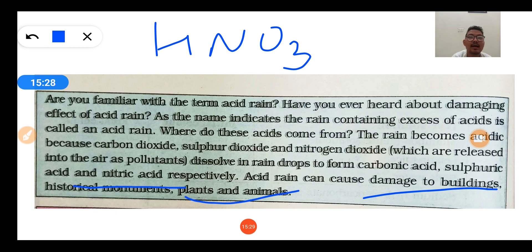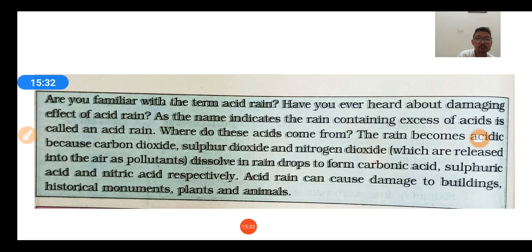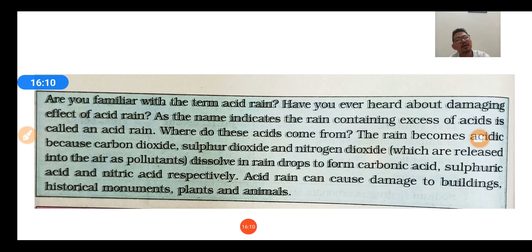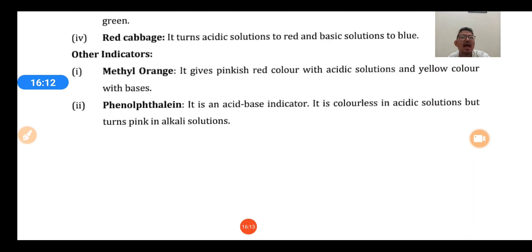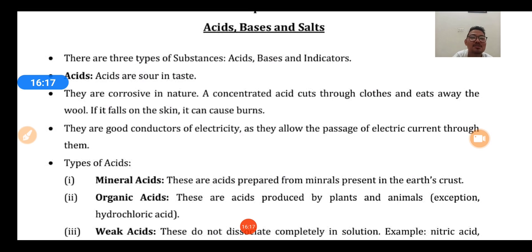Some special facts: every cell in our body contains an acid called deoxyribonucleic acid or DNA, which controls features like our looks, eye color, and height. Proteins that build our cells are made up of amino acids. Fat in our body also contains acid, called fatty acids. These are some additional important facts about acids found in living organisms.